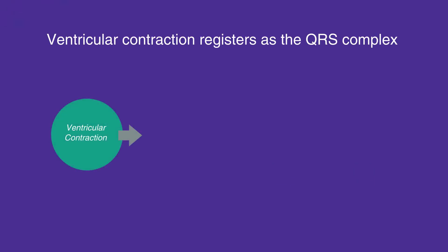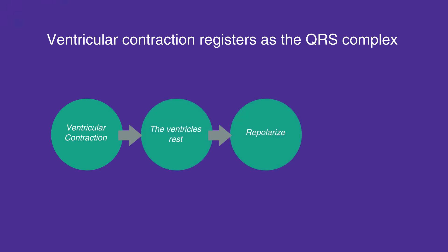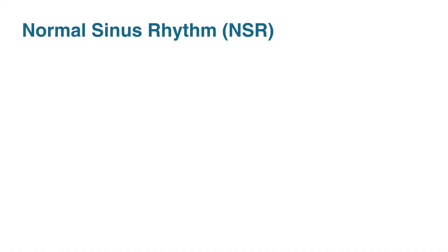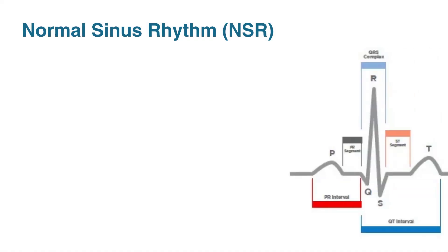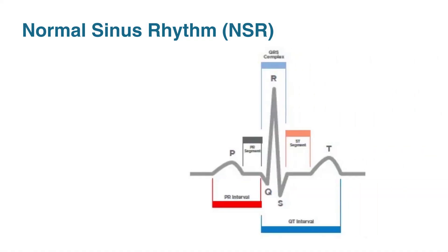Following ventricular contraction, the ventricles rest and repolarize, which registers as the T wave. The atria also repolarize, but this coincides with the QRS complex; therefore, it cannot be observed on the ECG strip.